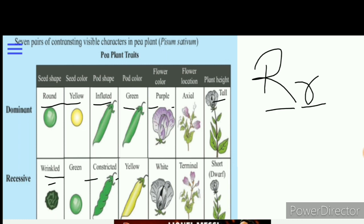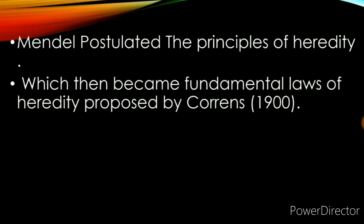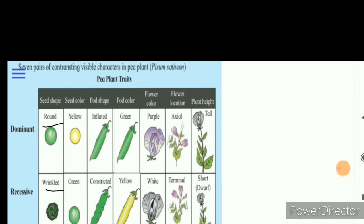Mendel postulated the principles of heredity using statistical and mathematical logic, and presented results clearly. These principles became the fundamental laws of heredity, proposed by Correns in 1900. Mendel did not know about genes, DNA, or chromosomes — those concepts did not exist in his time. But he said that some factor is transferred from parent to offspring, and because of this factor, heredity is visible in offspring.